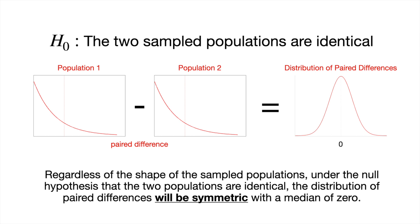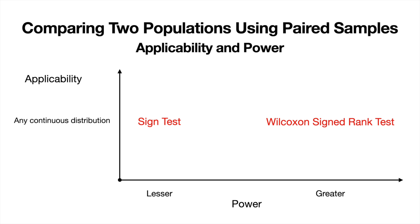Under the null hypothesis, the population of paired differences will be symmetric, and in particular symmetric about zero. So we can transform a problem involving two populations with paired samples into a problem involving one population of paired differences. Under the null hypothesis, that population will be symmetric about zero, which is the median. We can then apply not only the sign test but also the Wilcoxon signed rank test. This issue of the distribution needing to be symmetric gets resolved by taking the differences and considering the distribution under the null hypothesis.